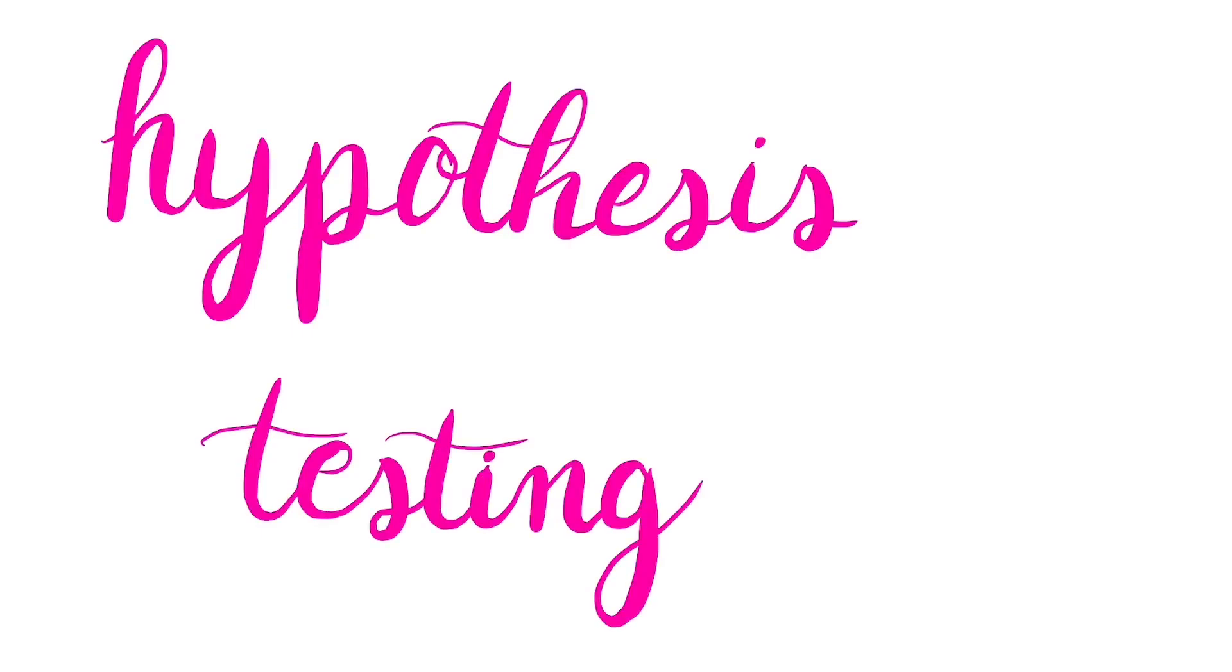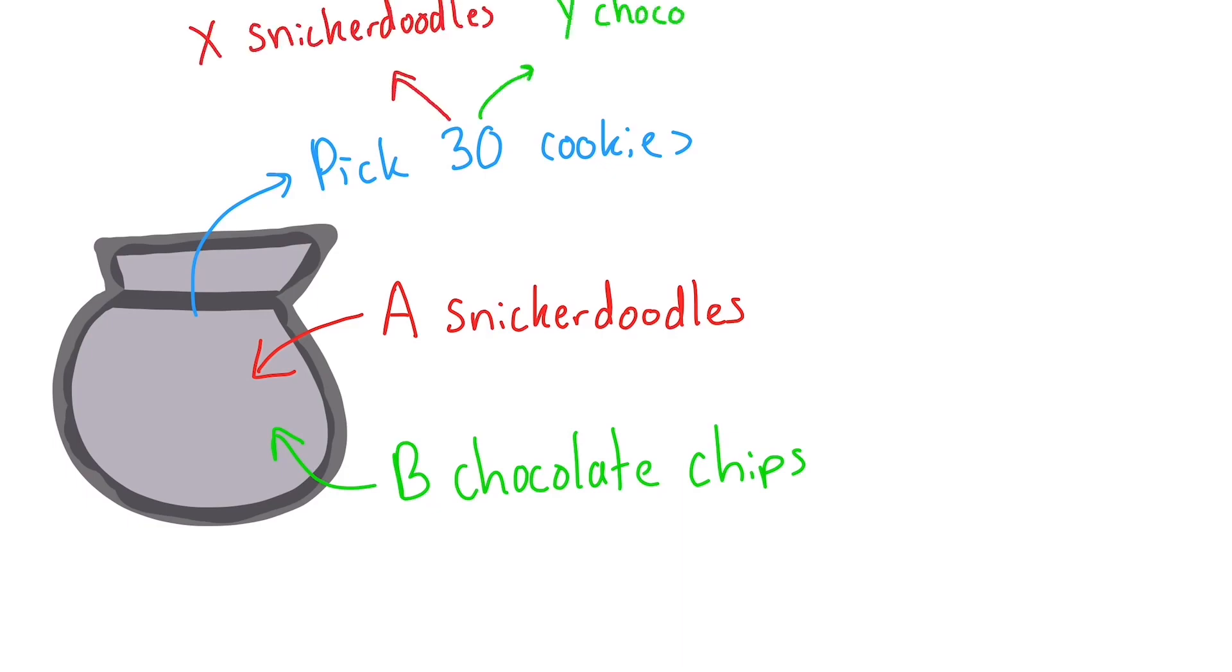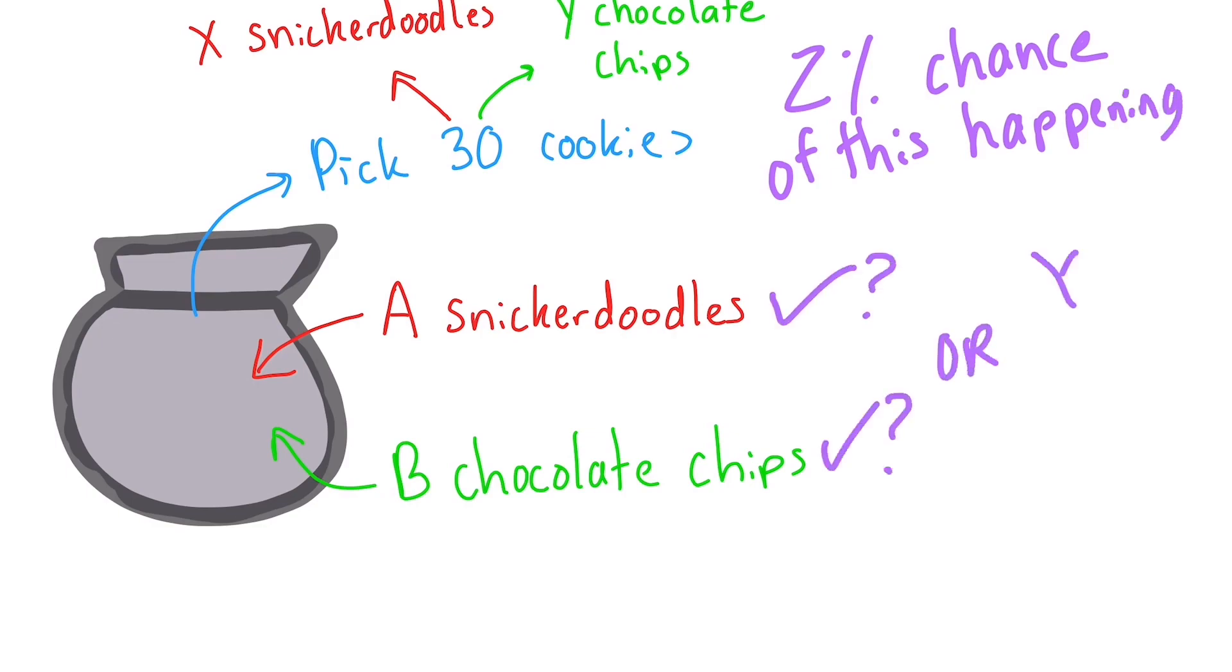The process of doing this is what's covered in a branch of statistics called hypothesis testing. In this example, we can see the likelihood that we got x chocolate chip and y snickerdoodle cookies in order to check whether our information about how many of each kind of cookie was in the bag to begin with was correct.